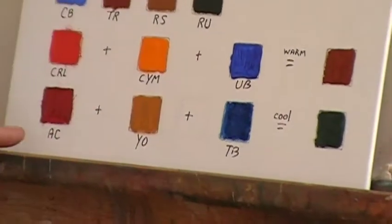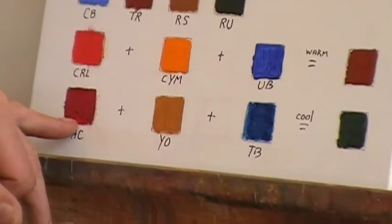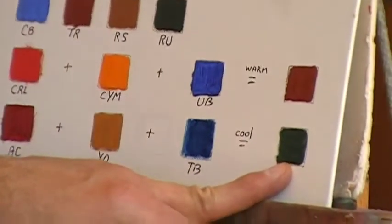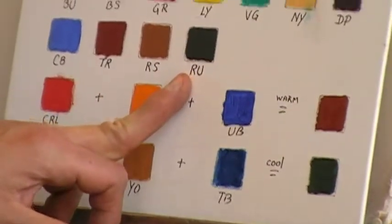And again, I've done the same thing here with the cool colors - alizarin crimson, yellow ochre and phthalo blue. I mix the three of those together and I get something that looks like a brown green which is basically very similar to raw umber.